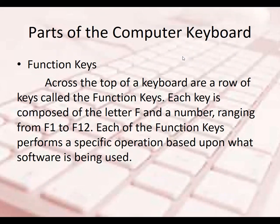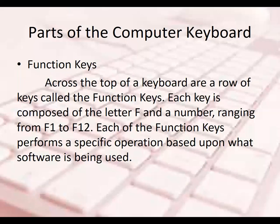Now we are talking about the parts of the computer keyboard. The first part is the function keys. Across the top of the keyboard is a row of keys called function keys. Each key is composed of the letter F and a number ranging from F1 to F12. F means function. Each function key performs a specific operation based on what software is being used — the function keys differ in each software.